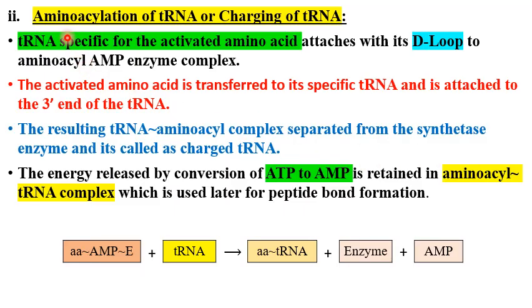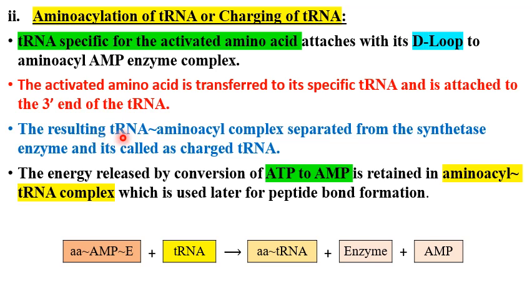In the second step — amino acylation of tRNA, or charging of tRNA — we have the amino acyl AMP enzyme complex from step one. A tRNA specific for that activated amino acid attaches to this complex via its D-loop, meaning this reaction also occurs in the presence of the same amino acyl tRNA synthetase enzyme. The activated amino acid is then transferred to its specific tRNA, attached to the 3-prime end, forming the charged tRNA, which separates from the enzyme.